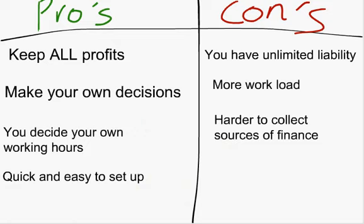Here's a chart explaining all the pros and cons of being a sole trader. Some of the pros include being able to keep all profits. Since you are your own boss, you get to keep all the profits put into your business — you keep 100% of them. Also, you make all of your own decisions, you can decide your working hours, and it's very quick and easy to set up. There's not much paperwork, you don't have to sign many forms, and you just start trading.